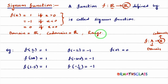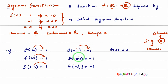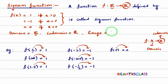Now I will write the range of the signum function. The range is the set of all images of the domain set. f of 2 is 1, so the image of 2 is 1. Image of 100 is 1. Image of 1.5 is 1. Whenever x is positive, its image is 1. f of minus 2 is minus 1, so the image of minus 2 is minus 1. Image of minus 100 is minus 1. Image of minus 1/2 is minus 1. When x is negative, for all negative numbers, its image is minus 1. When x is 0, image of 0 is 0. So the images are either 1, minus 1, or 0. Therefore, the range of the signum function is {1, minus 1, 0}.